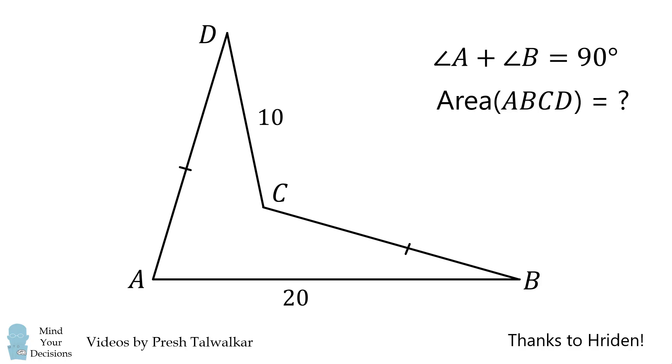I thank Hriden for the suggestion. For a little bit of a challenge you can solve the general case where AB has a length equal to X and CD has a length equal to Y.